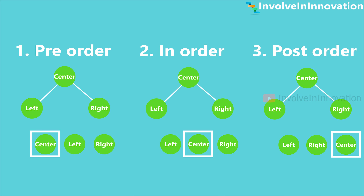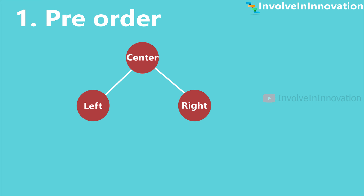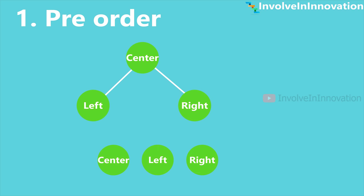First we will see about pre-order tree traversal. First visit the center node, then traverse the left node, then traverse the right node. The order is center, left, and right. This is applicable even to the subtree — first the root node, then all the nodes in the left subtree, and then all the nodes in the right subtree.